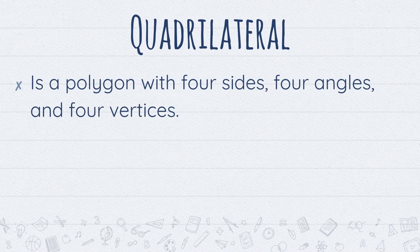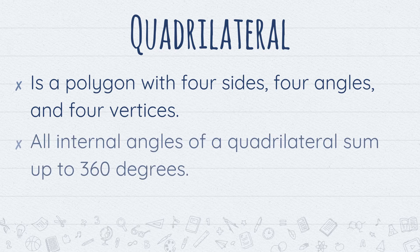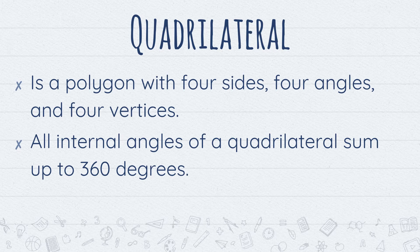Quadrilateral is a polygon with four sides, four angles, and four vertices. All internal angles of a quadrilateral sum up to 360 degrees.